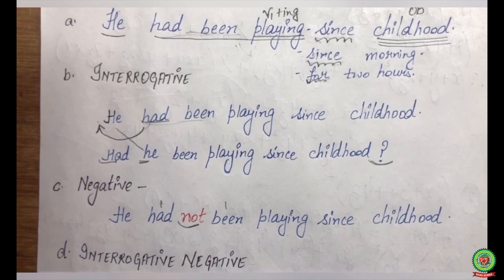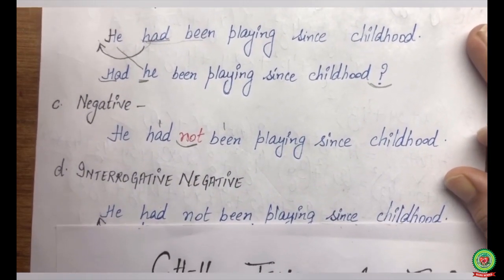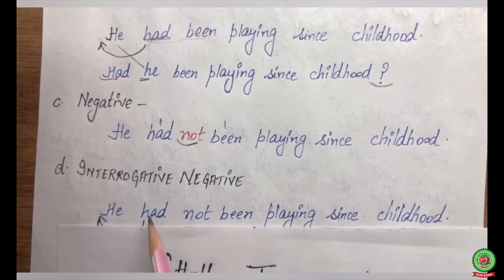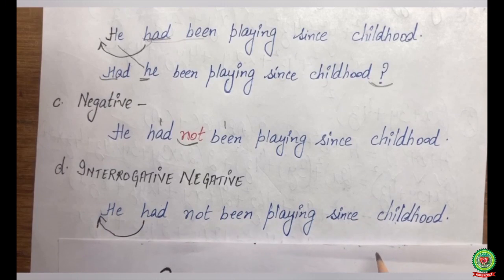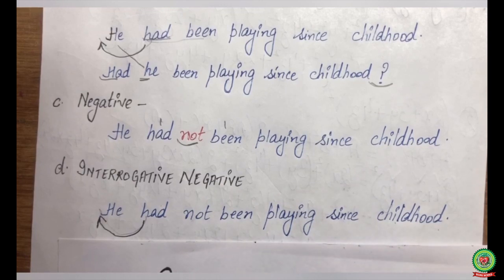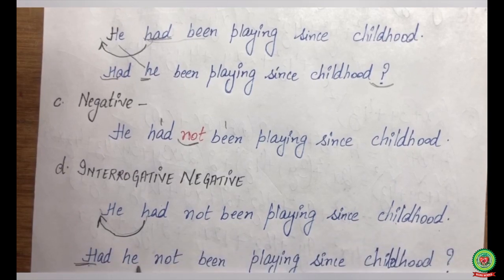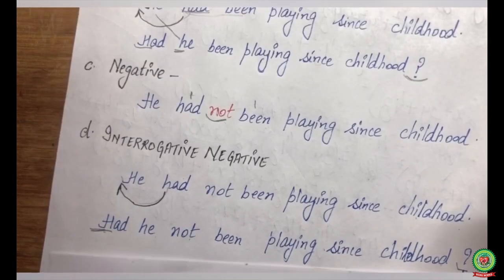After this we have the interrogative negative. In interrogative negative, take your negative sentence: 'He had not been playing since childhood.' What you have to do is take 'had' outside. The rest of the sentence remains the same, but at last you add a question mark. So it becomes: 'Had he not been playing since childhood?' — 'Had' with a capital H, and a question mark at the end.